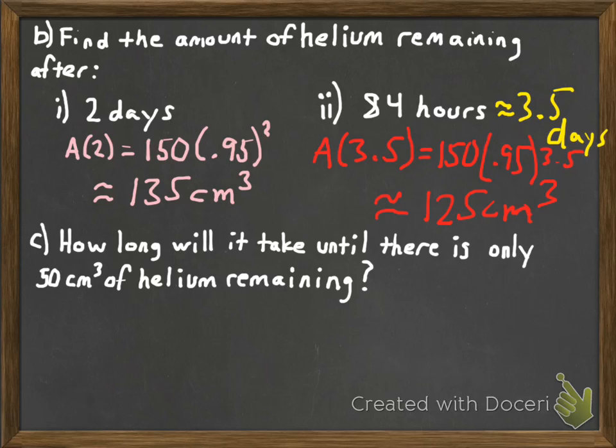Next thing we're going to figure out is how long it will take until there's only 50 cubic centimeters, or one-third of our original amount of helium remaining. Let's go ahead and write our equation, but instead of writing A equals, we're going to put 50 as the current quantity. Solve that.